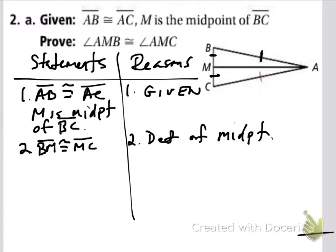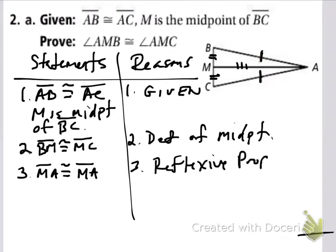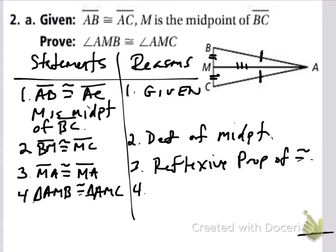I have two pieces so far: AB ≅ AC, and BM ≅ MC. But remember, we need at least three pieces to prove the triangles congruent. The third piece is that segment MA is congruent to segment MA by the reflexive property of congruence. Now I'm in a position to prove the triangles congruent. Triangle AMB is congruent to triangle AMC by side-side-side.